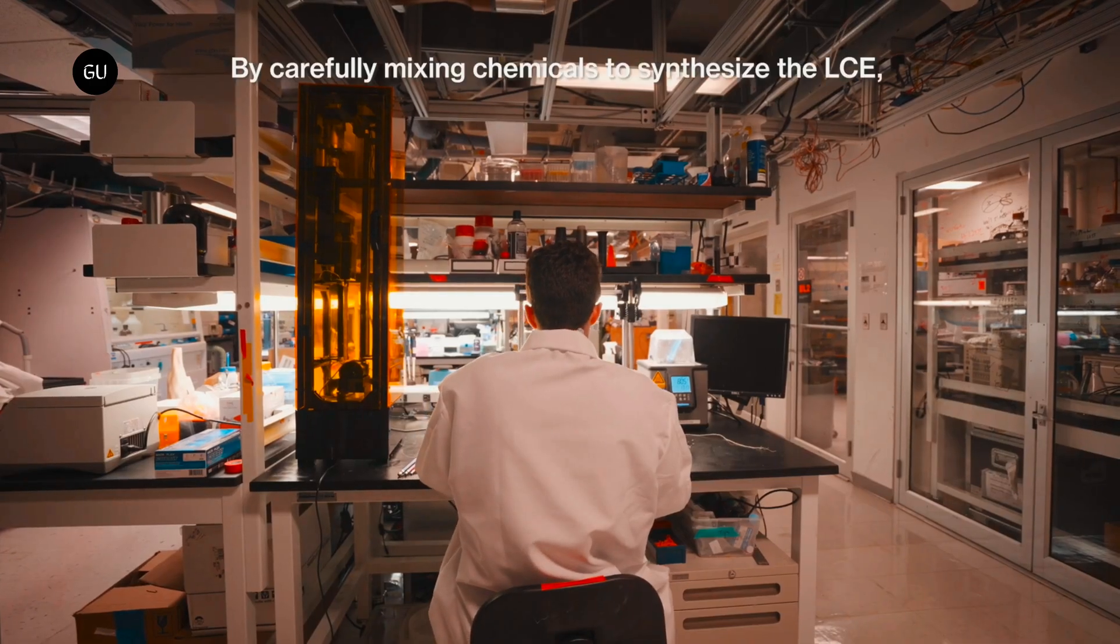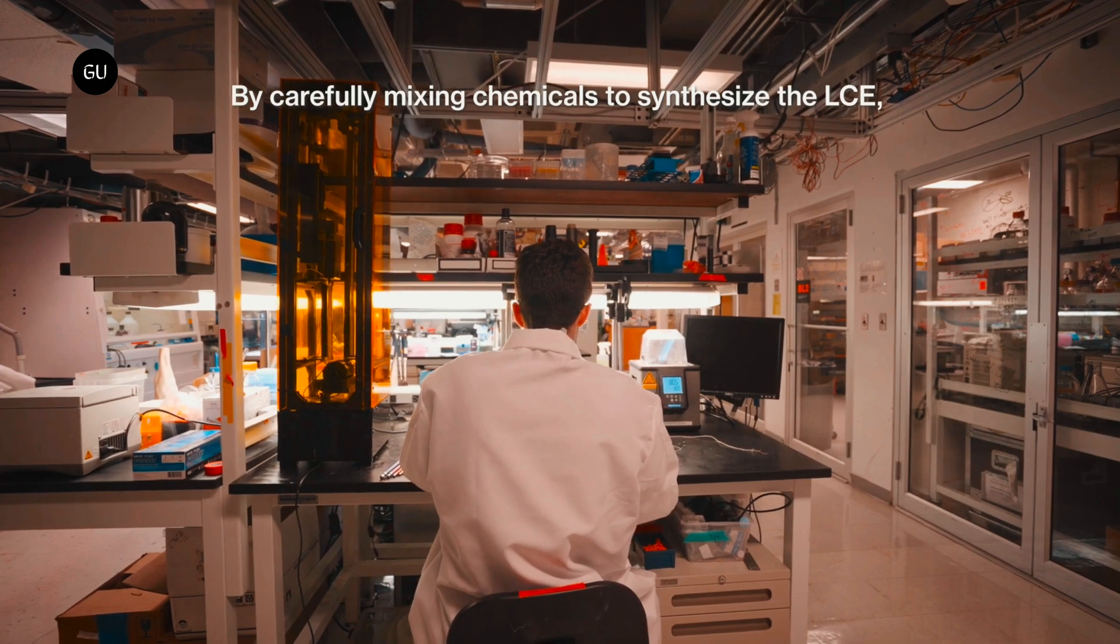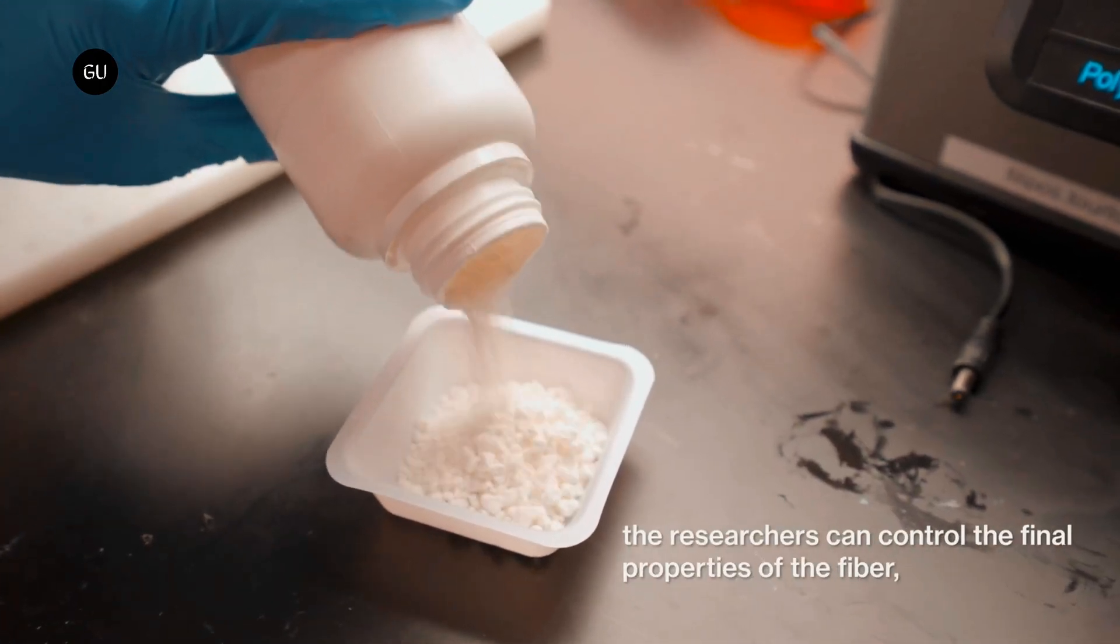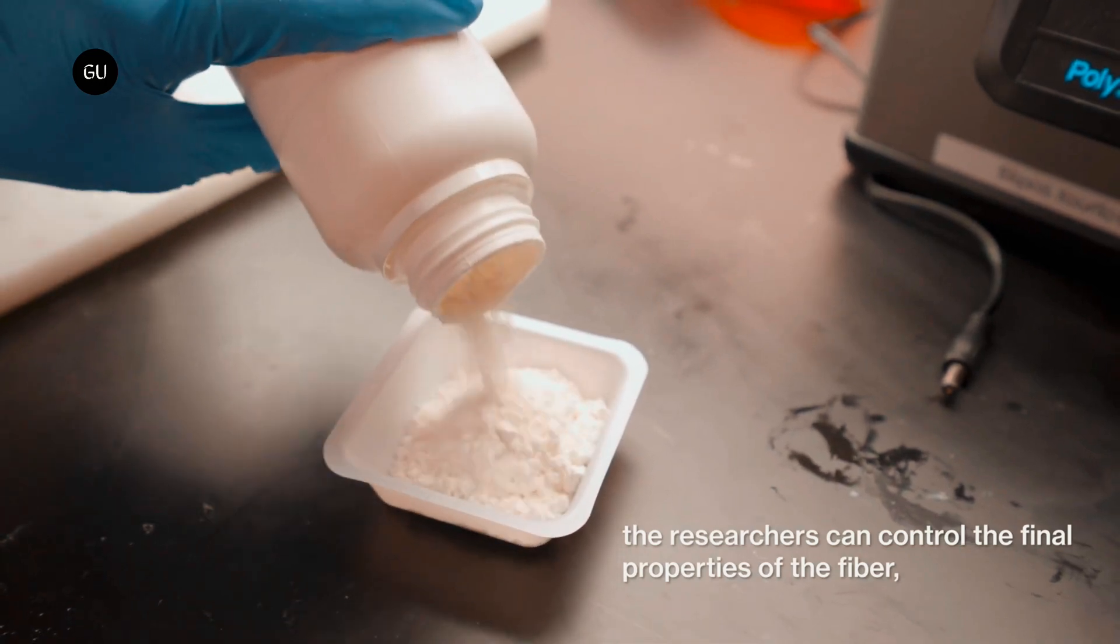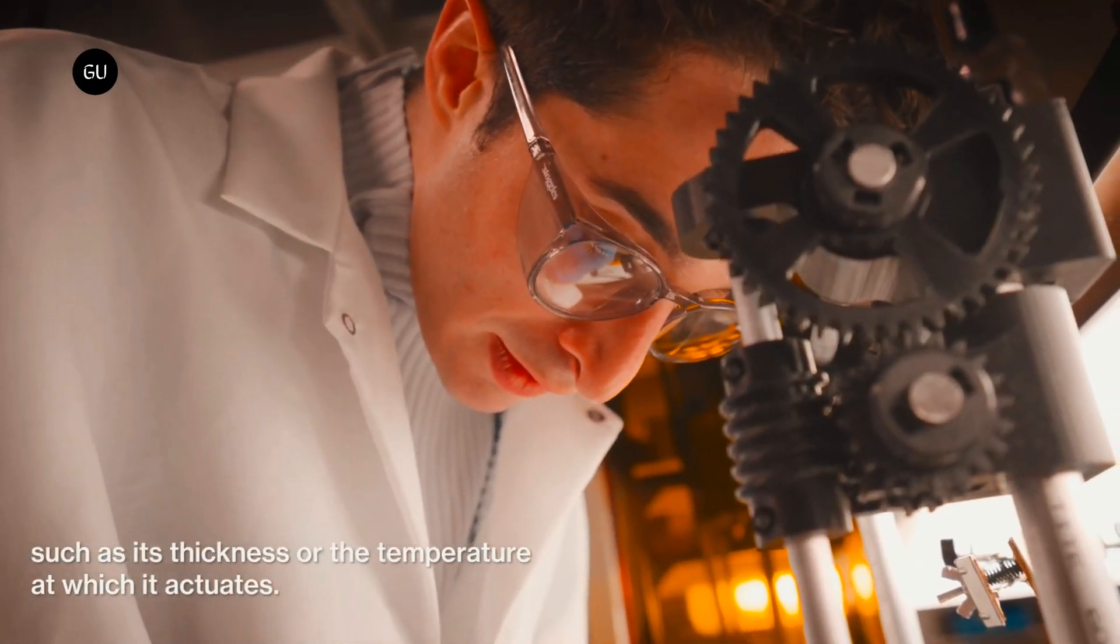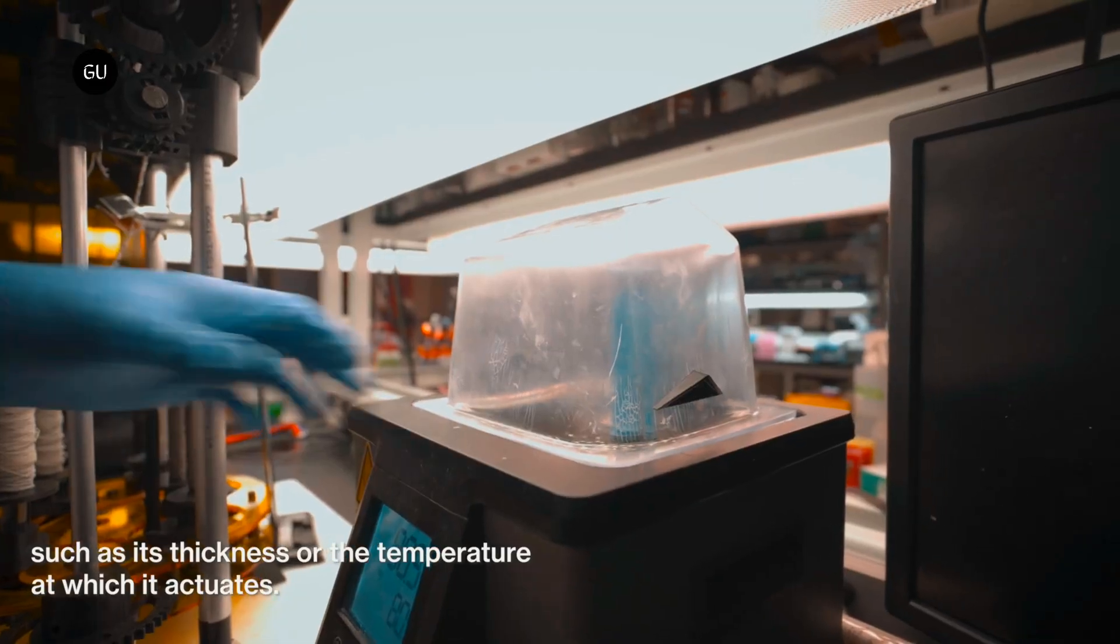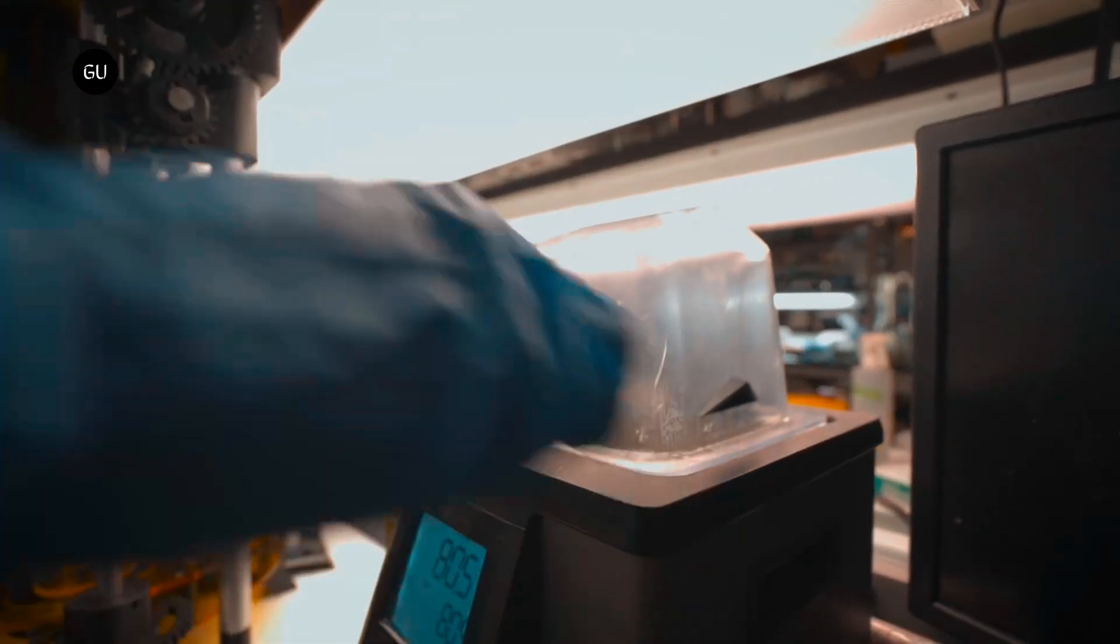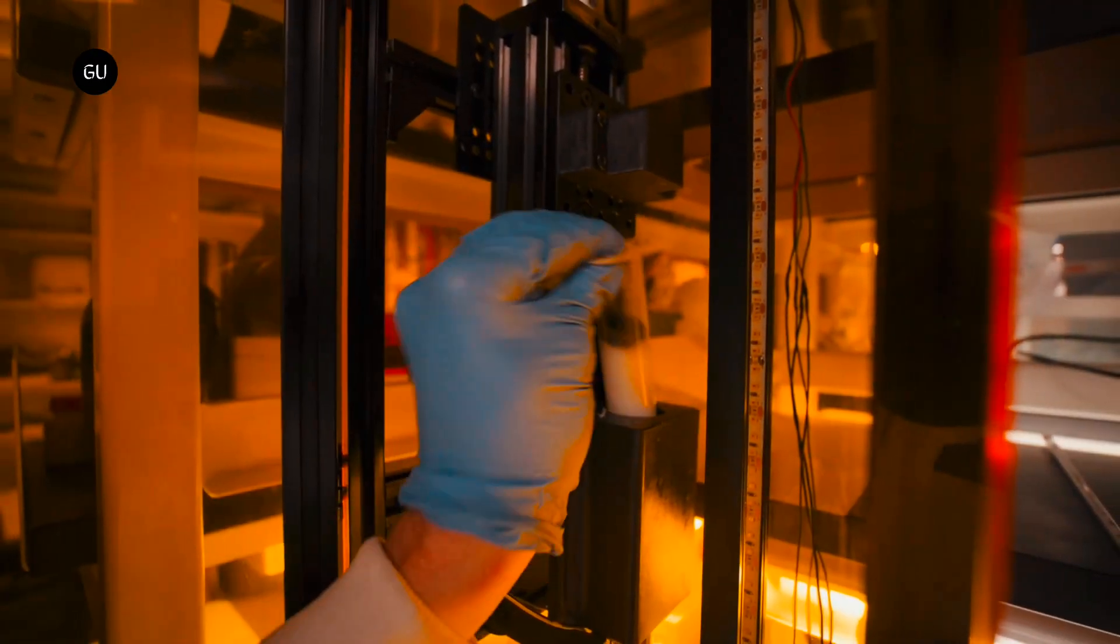A fiber is created by slowly squeezing heated LCE resin through a nozzle while curing it with UV light. The light must be just right—low light causes the material to separate and drip; too bright, and it causes it to clump. The fiber is then dipped in oil to give it a slippery coating and cured again with strong UV light, creating a strong, smooth fiber.